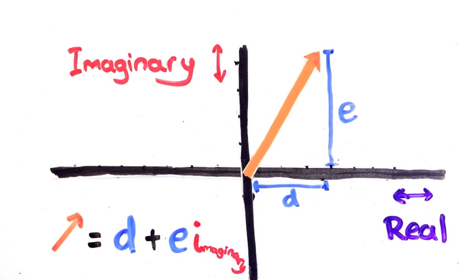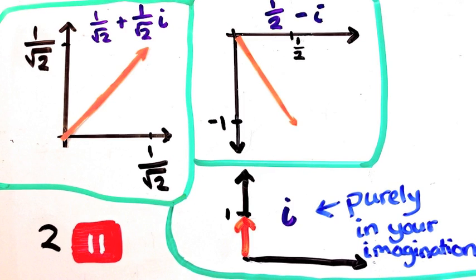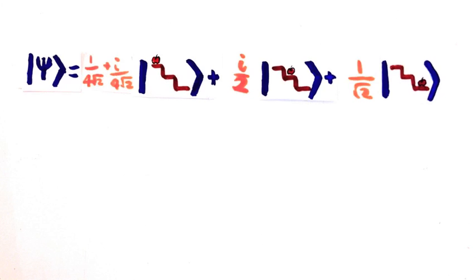So instead of drawing the arrow, we can just write down this. And here are some other examples of it. This is really useful, because now we can write wave functions more compactly. For example, this wave function.